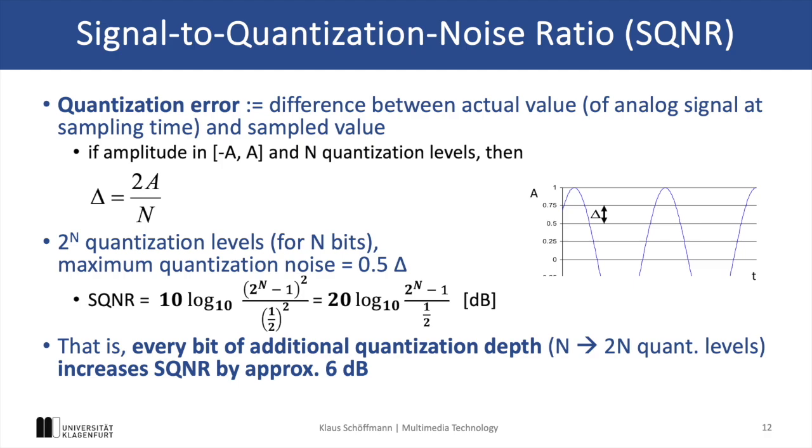So, if we would have a signal with an amplitude range from minus a to a, and n quantization levels, then we can approximate this quantization error by 2a divided by n.